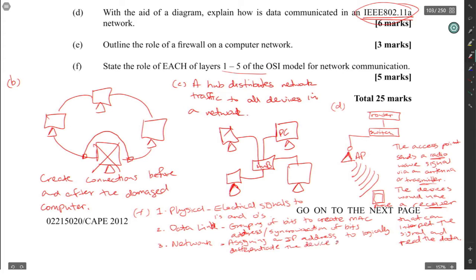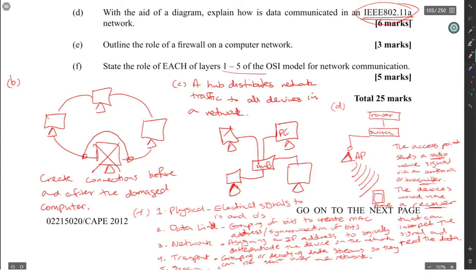Layer 4 is the transport layer — grouping or decoding data streams so they can be sent over the network. Layer 5 is the session layer — authenticating users and keeping connections alive. You could state: physical, data link, network, transport, and session. The key to this question was to identify layers one to five only.